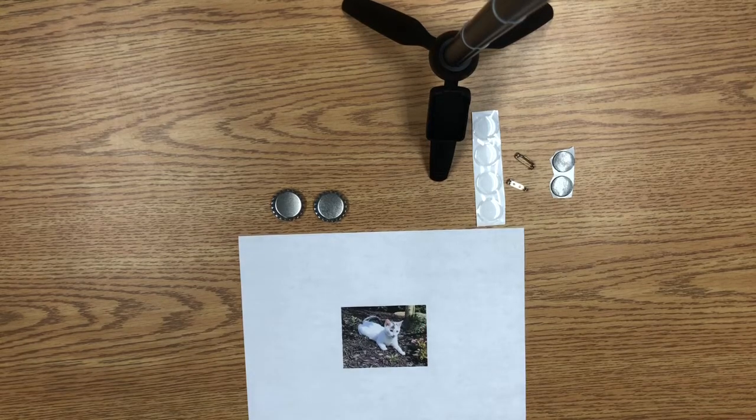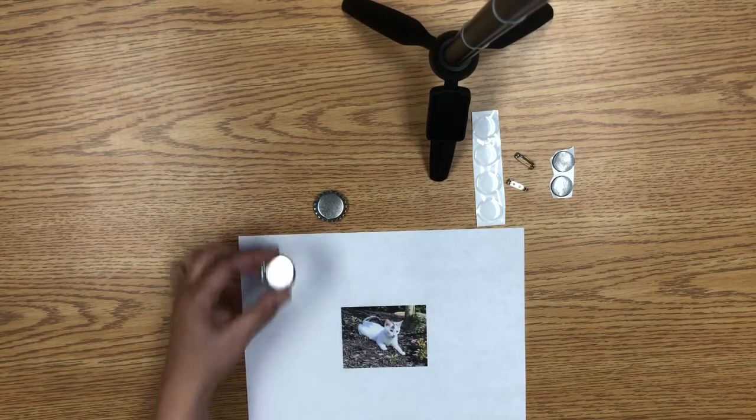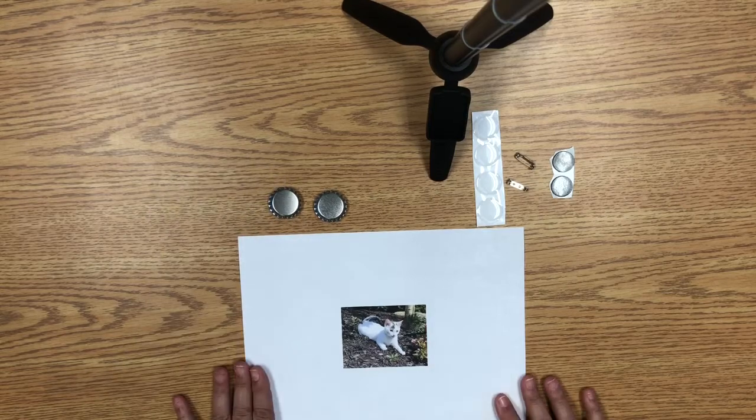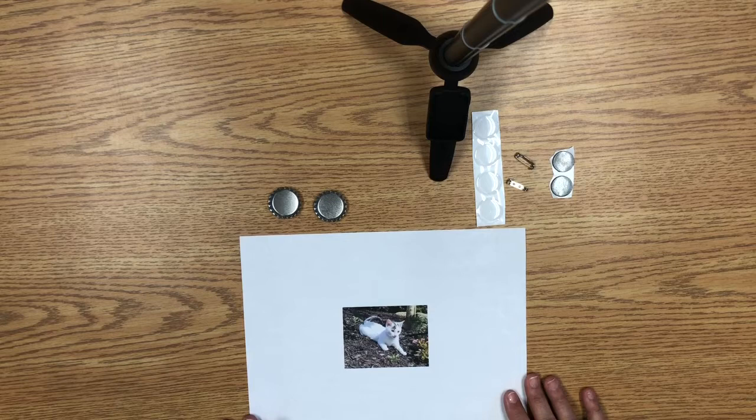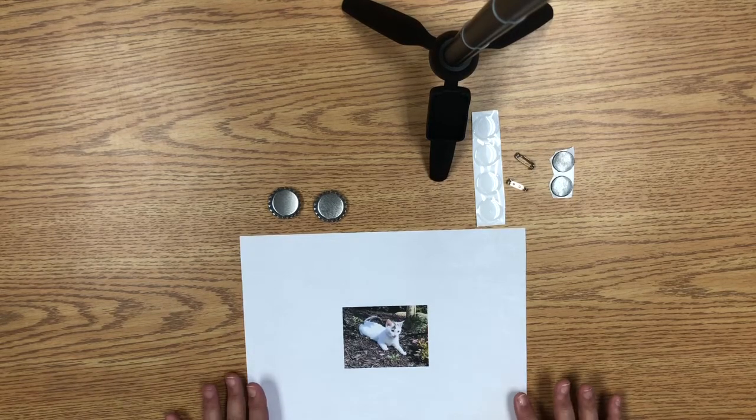The first thing you're going to do is decide what art you want to put inside your bottle cap. I decided to print out a photo of my daughter's cat. I think she's really cute and I think I'm going to make it into a button.